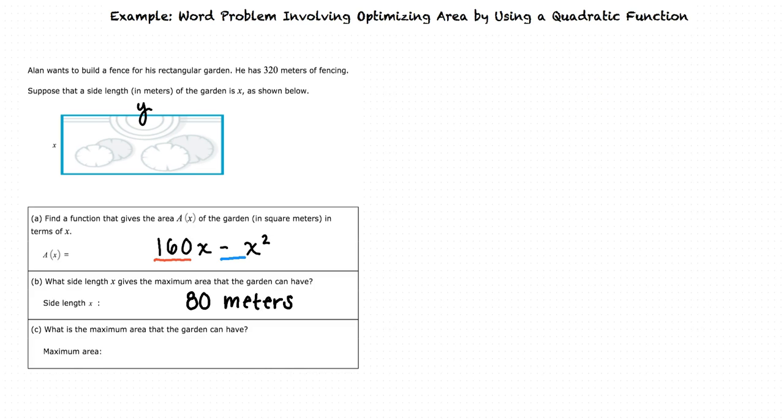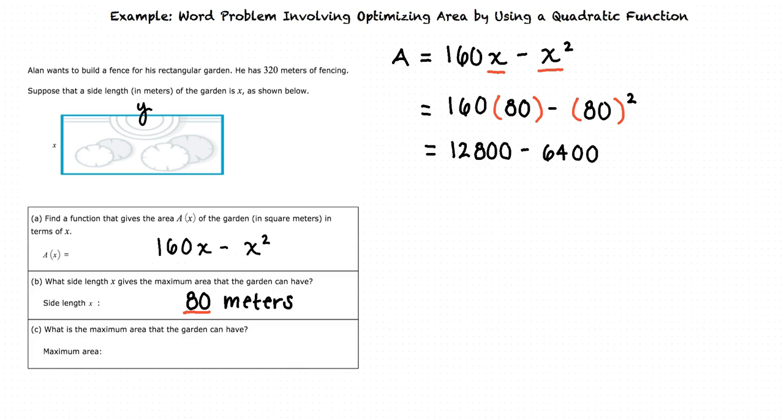For the third part of this problem, we need to find the maximum area that the garden can have. We will do this by substituting 80 in for x in our area equation. 160 multiplied by 80 is equal to 12,800. And 80 squared is equal to 6,400. Subtracting 6,400 from 12,800 results in 6,400 square meters, which is our maximum area.